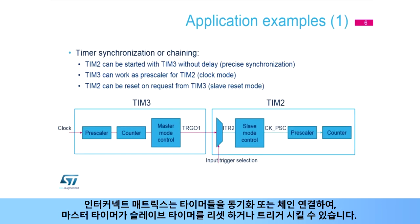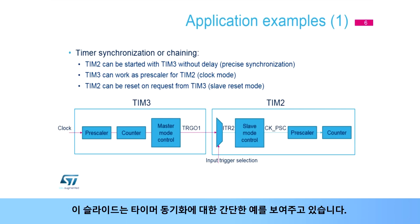The interconnect matrix can be used for synchronizing or chaining timers, allowing, for example, a master timer to reset or trigger a second slave timer. This slide shows a simple example of timer synchronization.